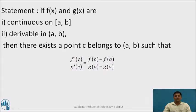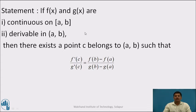That is, the assertion of Cauchy's mean value theorem is that if we consider any two functions defined on closed interval [a, b], and if those two functions are continuous on [a, b] and derivable on open interval (a, b), then for those two functions this condition holds.